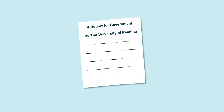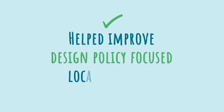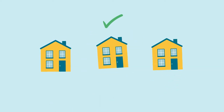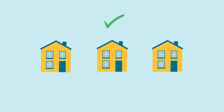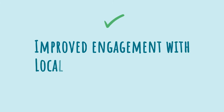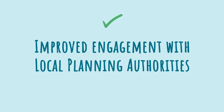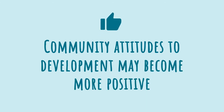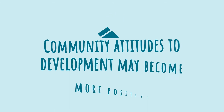A report for government by the University of Reading in 2020 found evidence that Neighbourhood Planning helped improve design policy, focused local priorities — for example ensuring suitable housing was available for specific societal groups. It improved engagement with local planning authorities and community attitudes to development may become more positive because of the neighbourhood planning process.